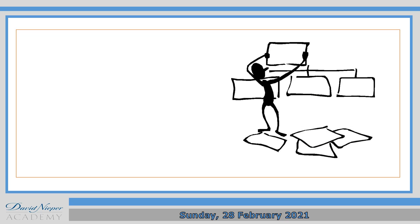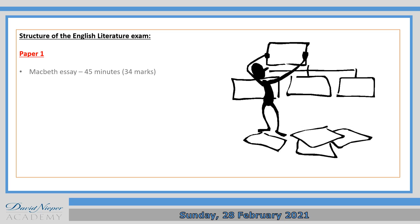So to do that, you need to understand the overall structure of your English literature exams. There are two papers. Paper one: you have an essay on Macbeth, which takes you about 45 minutes, and a question on A Christmas Carol, also about 45 minutes. For both of those, you get given an extract — a couple of paragraphs from the story to write about — but you need to make links between the bit that they give you and your other knowledge of the rest of the book.